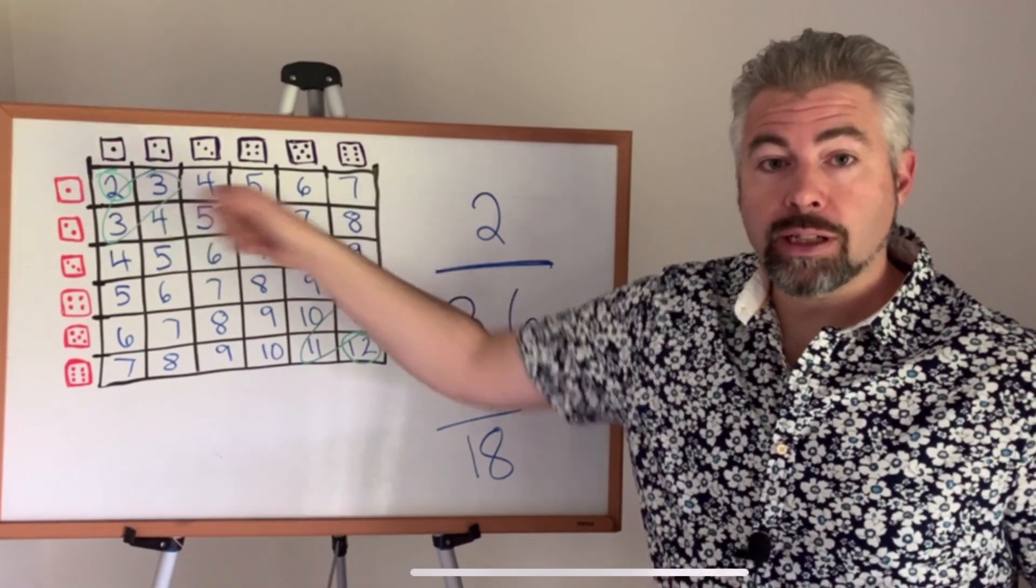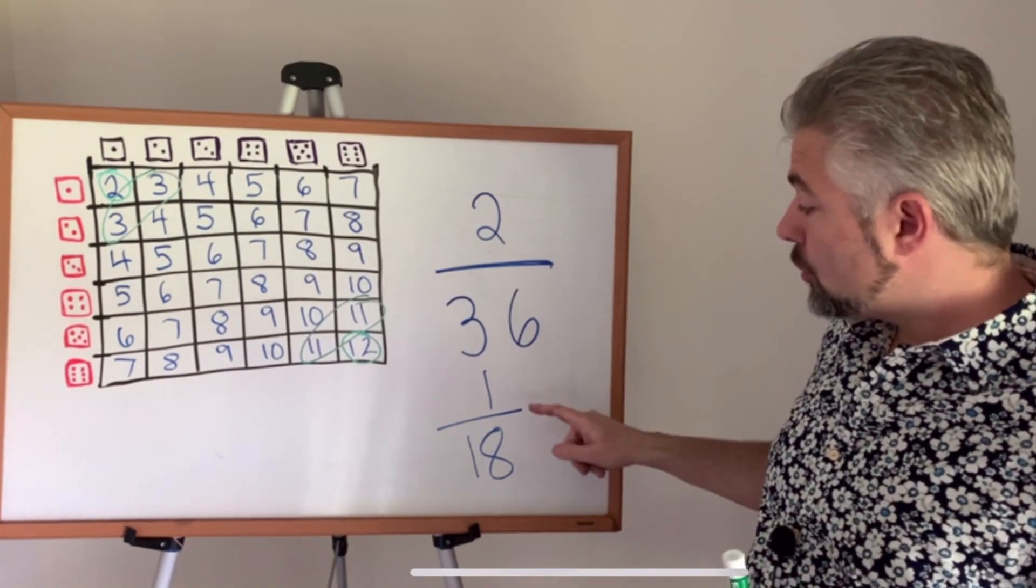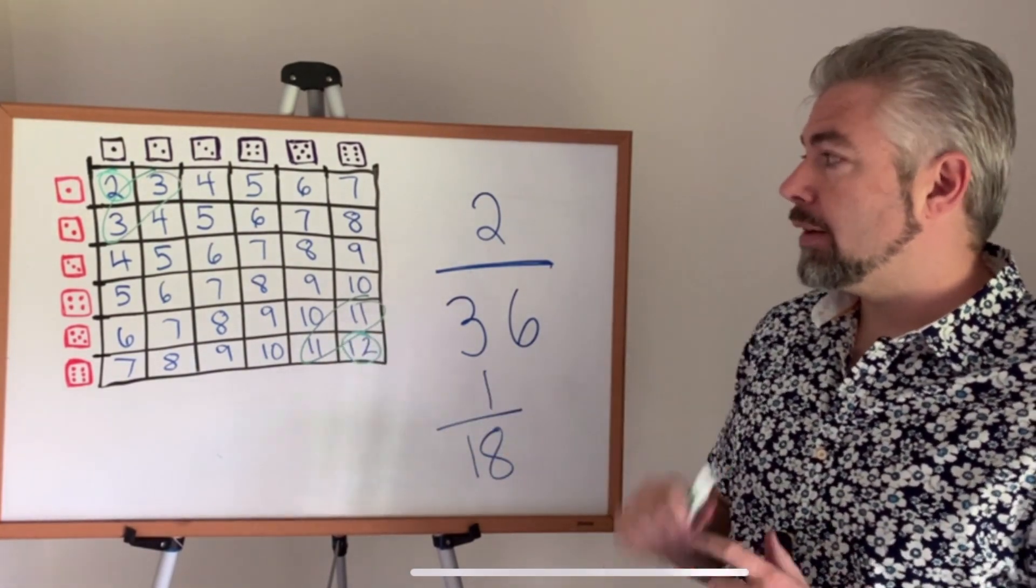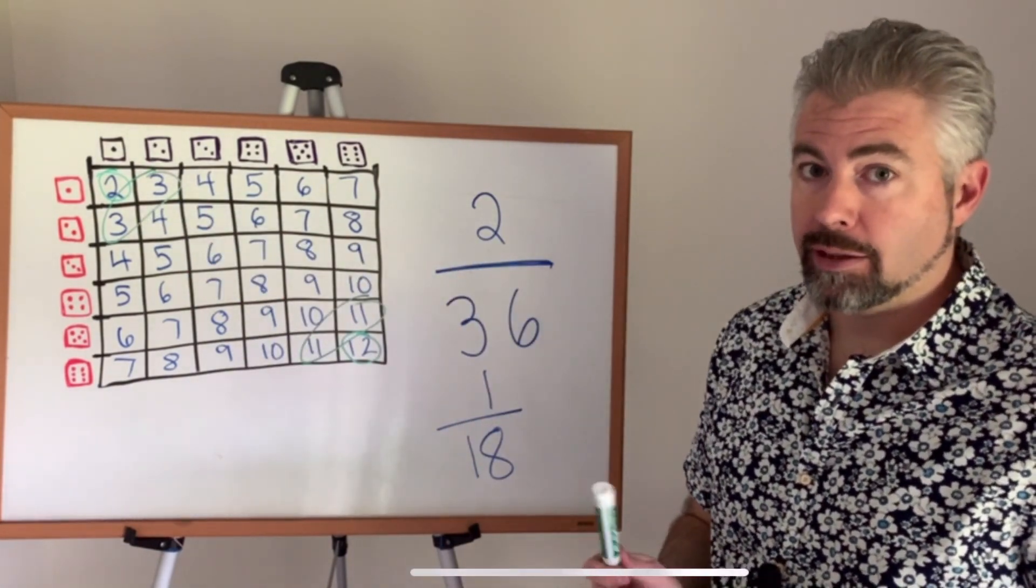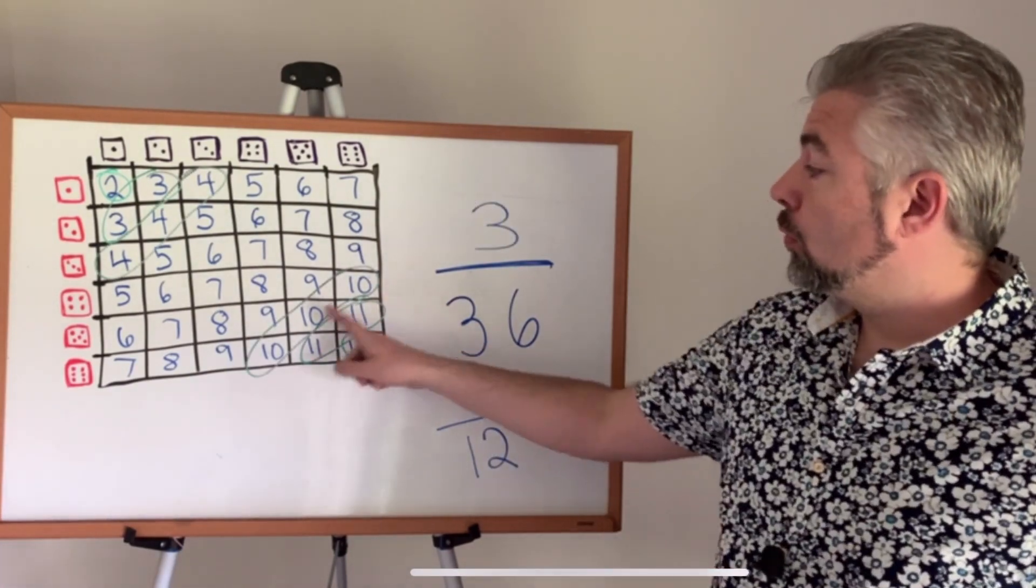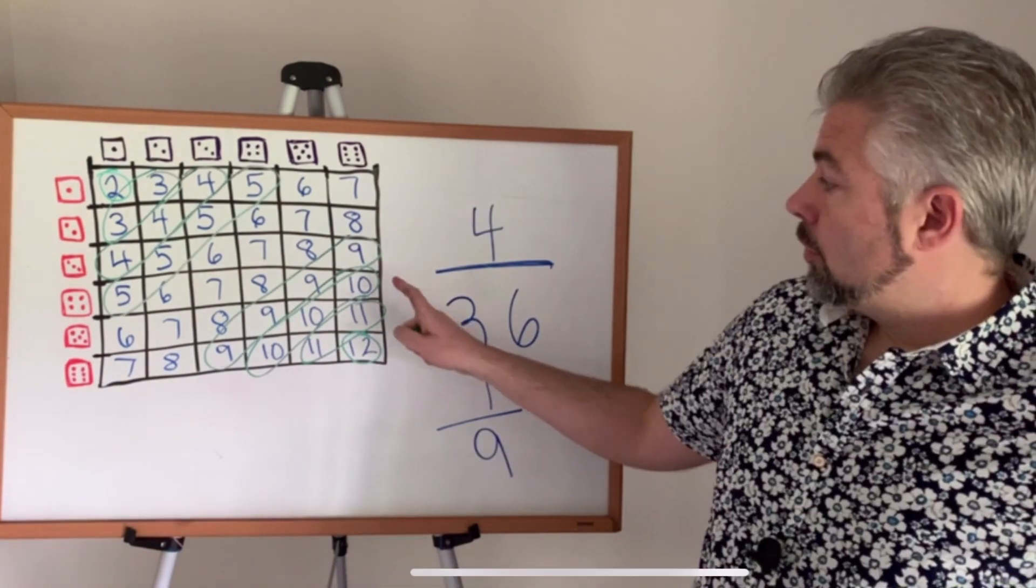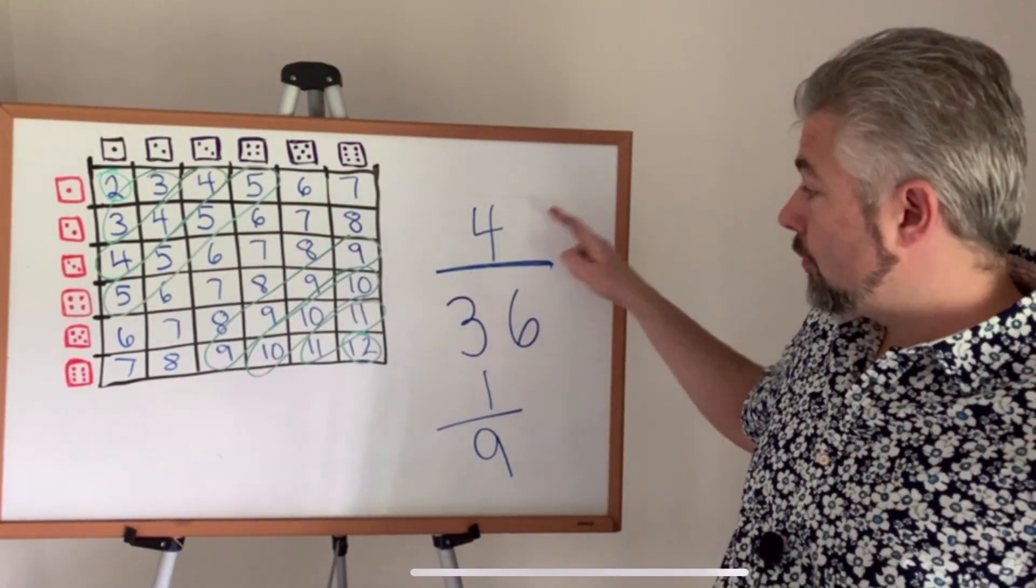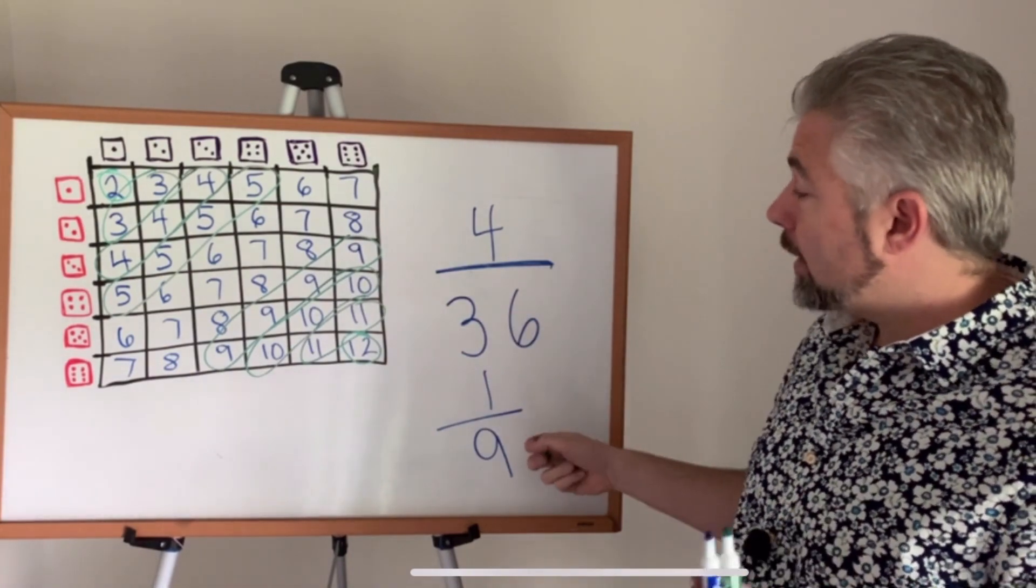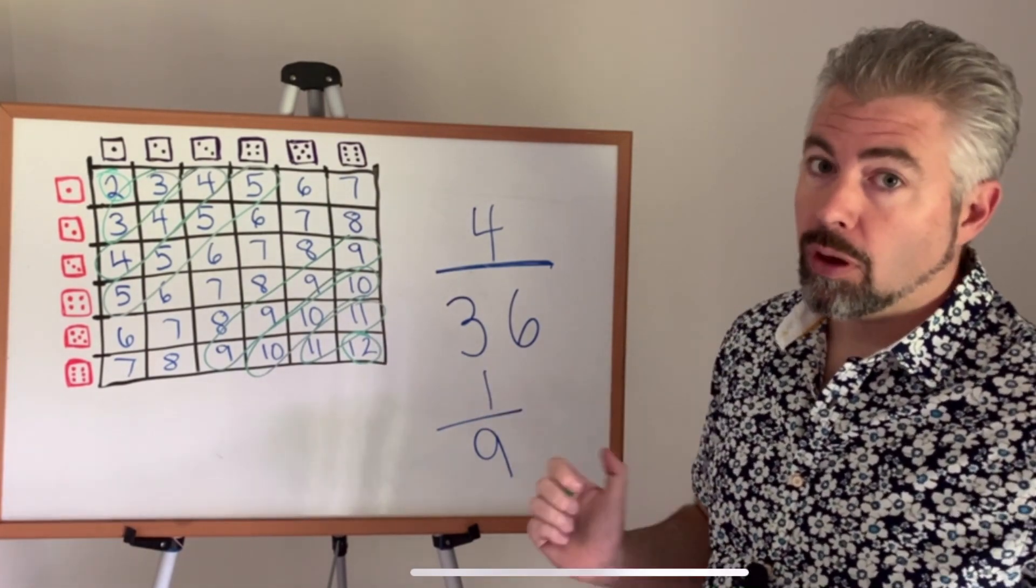Now there are two different ways that we can make three and two different ways we can make 11. So each of those are a probability of two out of 36. That can be reduced to one out of 18. What that means is on average, it's going to take 18 rolls before we get an 11 or 18 rolls before we come up with a three, much better than 36. But still, we shouldn't expect to see these numbers come up very often. Now we'll roll a 10 three times out of every 36. Same with rolling a four, which reduces to one out of 12. Our nines and our fives can come four different ways. So that's going to reduce to one out of nine. One out of every nine rolls should be a nine. And one out of nine rolls should also be a five. Not incredibly likely, but still so much more likely than one out of 36.